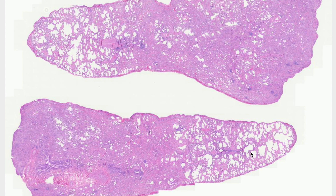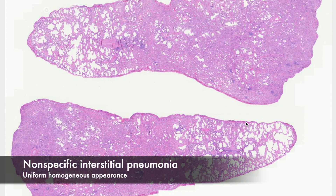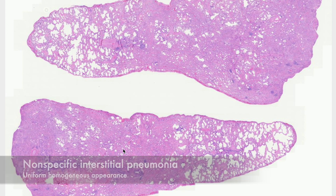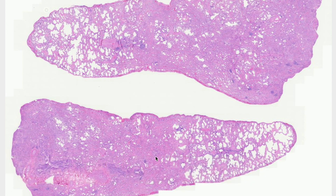In contrast to the previous case, this has a very homogeneous appearance. If we look starting from the pleural surface, going towards the center of the specimen and then back out to the pleural surface, it has a relatively uniform appearance, with really no accentuation underneath the pleura or around airways. Some areas are a bit busier than others, but this is actually just a bit of atelectasis that can happen to the specimen as it's being processed.